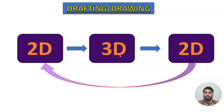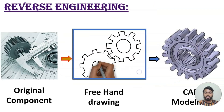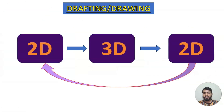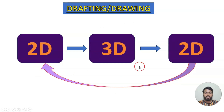I hope you have understood. That is the introduction for drawing. Next, we have reverse engineering. Reverse engineering means we have a 2D diagram, we convert to 3D, then from 3D back to 2D, and we cross-check whether the 3D model is correct or wrong.